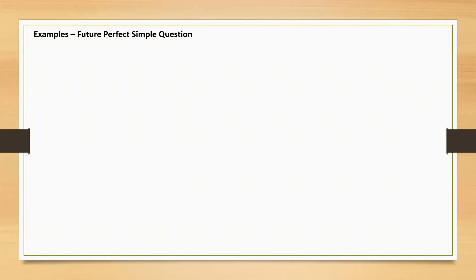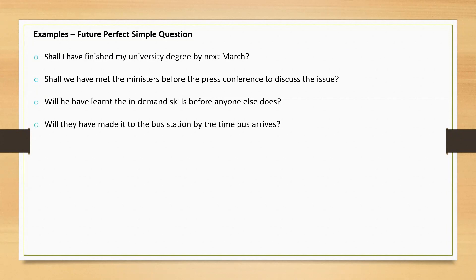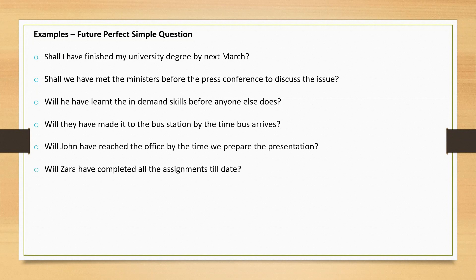More examples of future perfect simple question: 'Shall I have finished my university degree by next March?' 'Shall we have met the ministers before the press conference to discuss the issue?' 'Will he have learned the in-demand skills before anyone else does?' 'Will they have made it to the bus station by the time the bus arrives?' 'Will John have reached the office by the time we prepare the presentation?' 'Will Zara have completed all the assignments till date?'